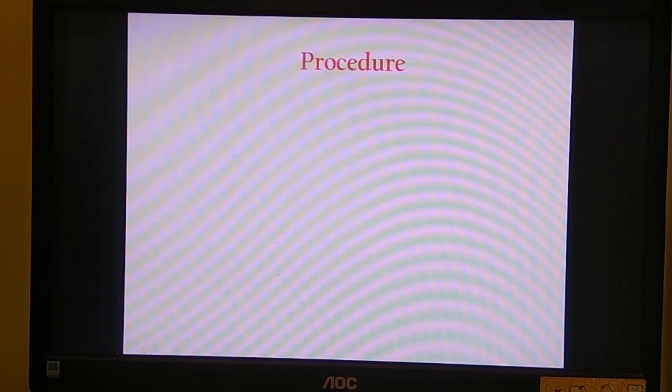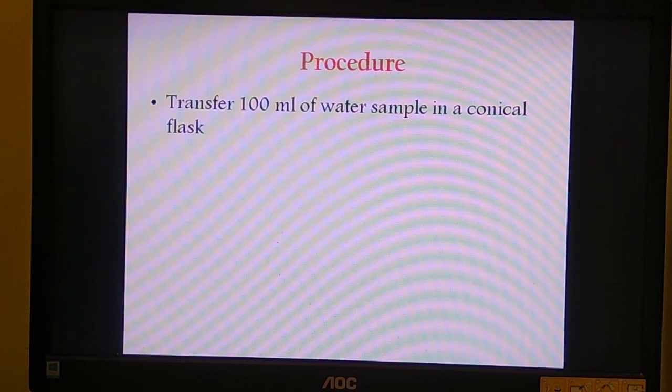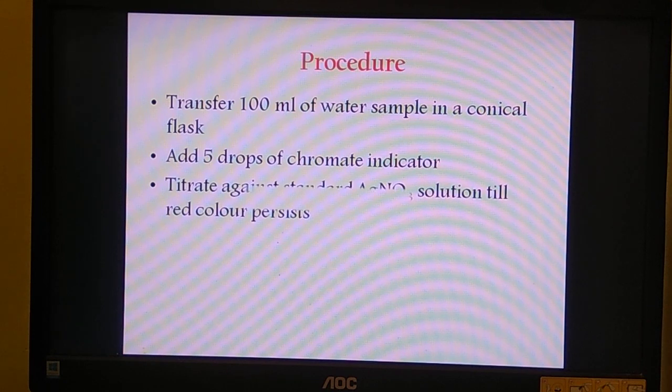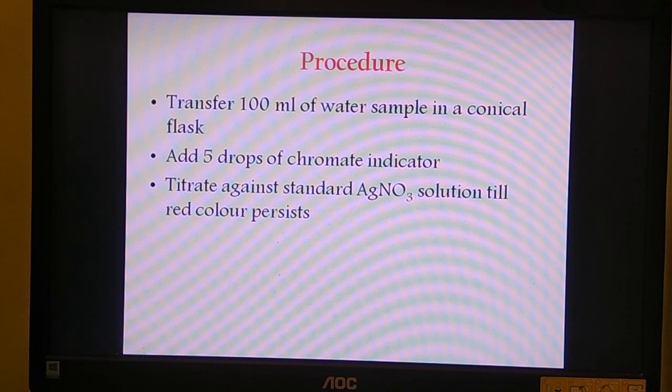Moving to the procedure. We need to transfer 100 ml of the water sample or test sample in a conical flask. To this we have to add about 5 to 8 drops of chromate indicator, which is the yellow colored solution, potassium chromate. Then we should start titrating it against the standard AgNO3 solution taken in the burette until the red color persists. This formation of red color, permanent red color, is an indication of the end point of titration.